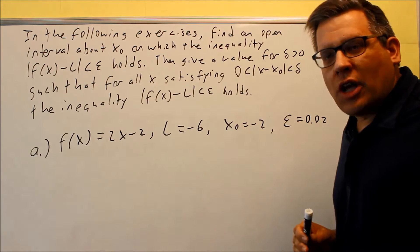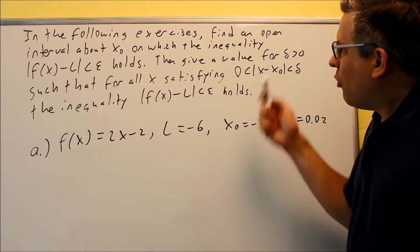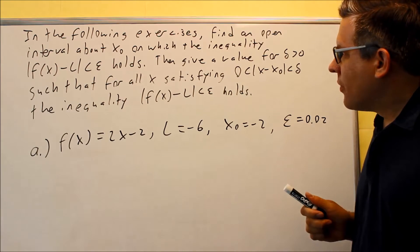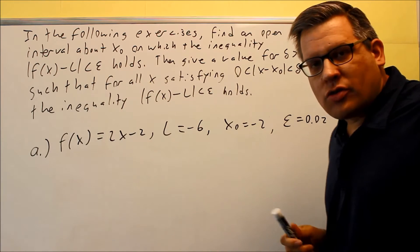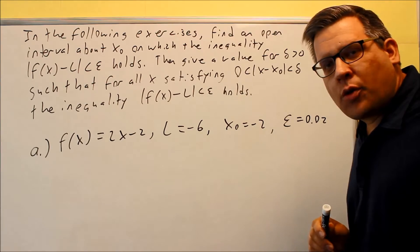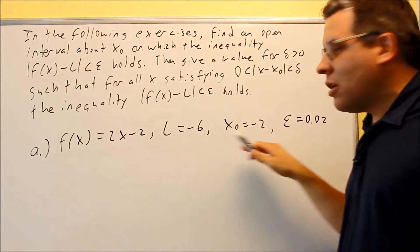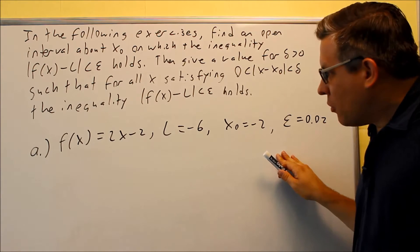and in this case it is 0.02. So we have two different things that we have to do, so let's do the first part. We want to find an open interval about x of 0, which is given as negative 2 here, in which this inequality holds. So in order to solve that, what we're going to do is we need to use this right here,